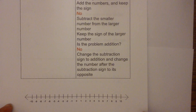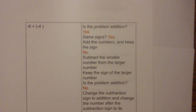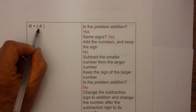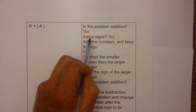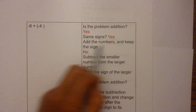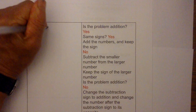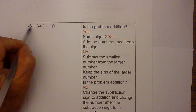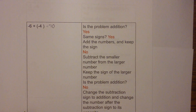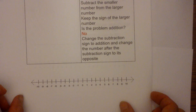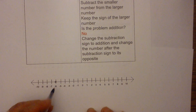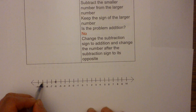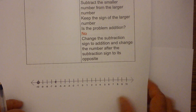Now we have negative six plus a negative four. Is it addition? Yes. Same signs? Yes. Add the numbers and keep the sign. Six plus four is ten; they were both negative, so the answer is negative ten. On the number line: we start at negative six, and since we have a negative number we move to the left — one, two, three, four — which gets us to negative ten.